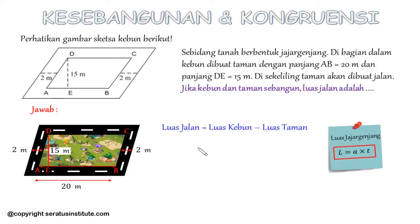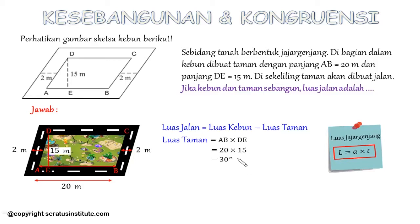Sekarang kita cari dulu luas tamannya. Kenapa kita mencari luas taman? Karena alas dan tinggi tamannya diketahui, sehingga bisa kita cari. Jadi luas taman: alasnya AB, tingginya DE. AB diketahui 20 meter dan DE 15 meter. Jadi kita kalikan: alas dikali tingginya, 20 × 15 sama dengan 300 m².